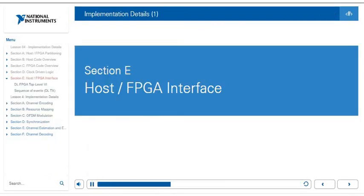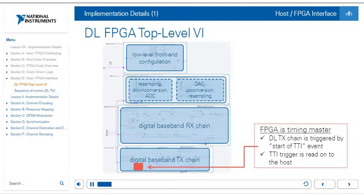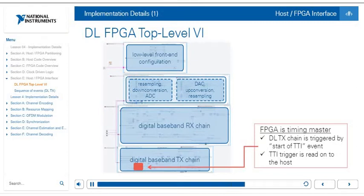In section E, we discuss the host and FPGA interfaces in more detail. In the downlink FPGA top-level VI, the highlighted block is the FPGA timing control. In this case, FPGA timing is master. The downlink transmit chain is triggered by a start-of-TTI event, and the TTI trigger is read onto the host. The start-of-TTI event is what triggers the full transmit chain, originating on the FPGA once all the code is ready to run.